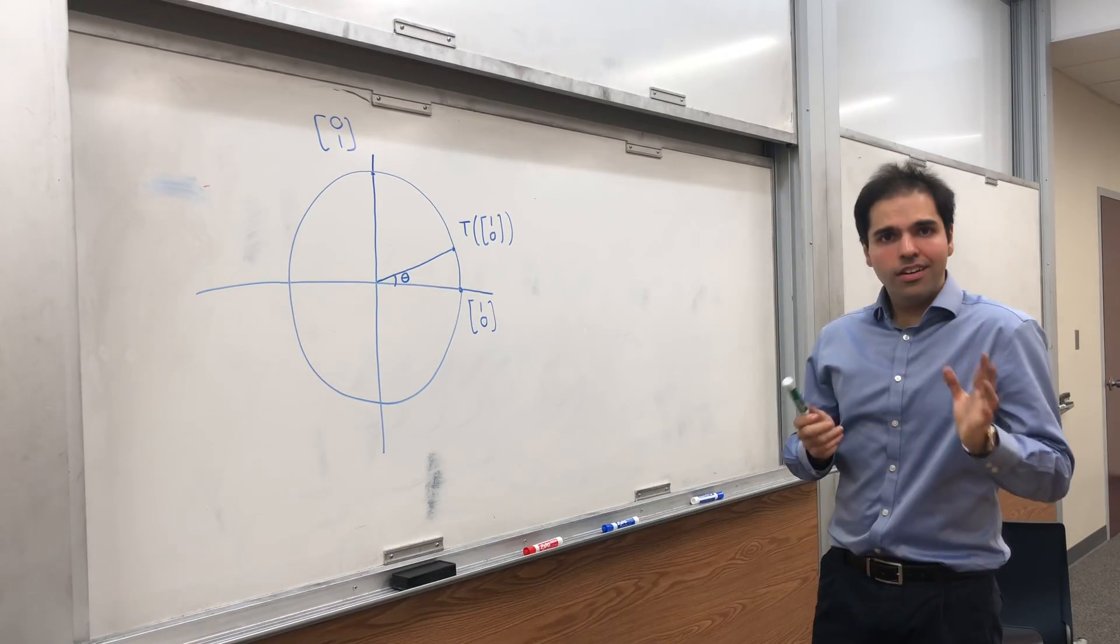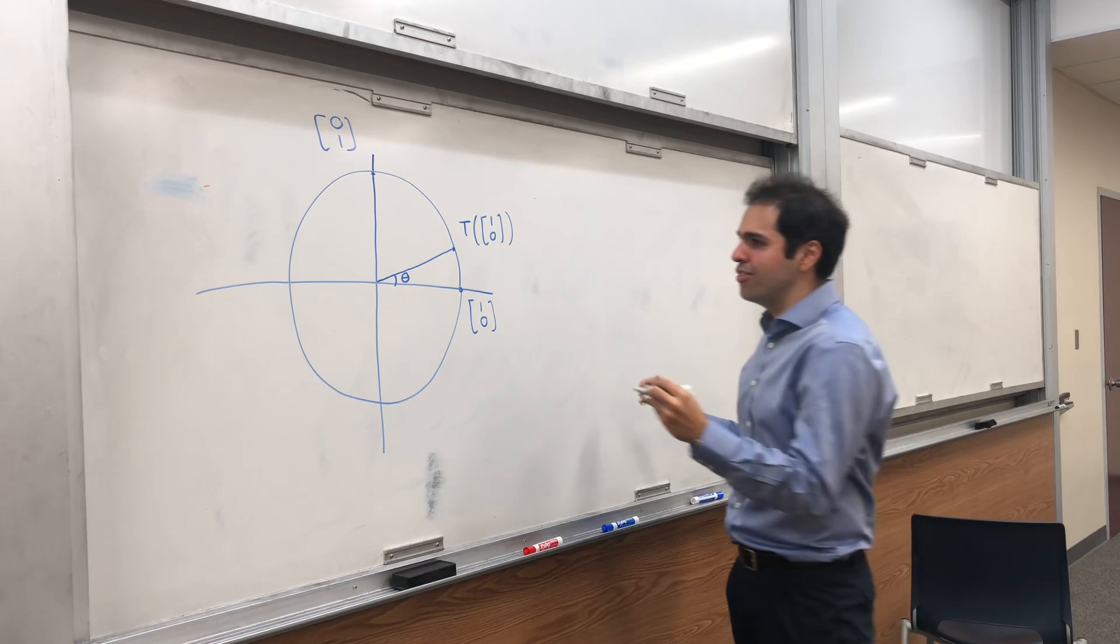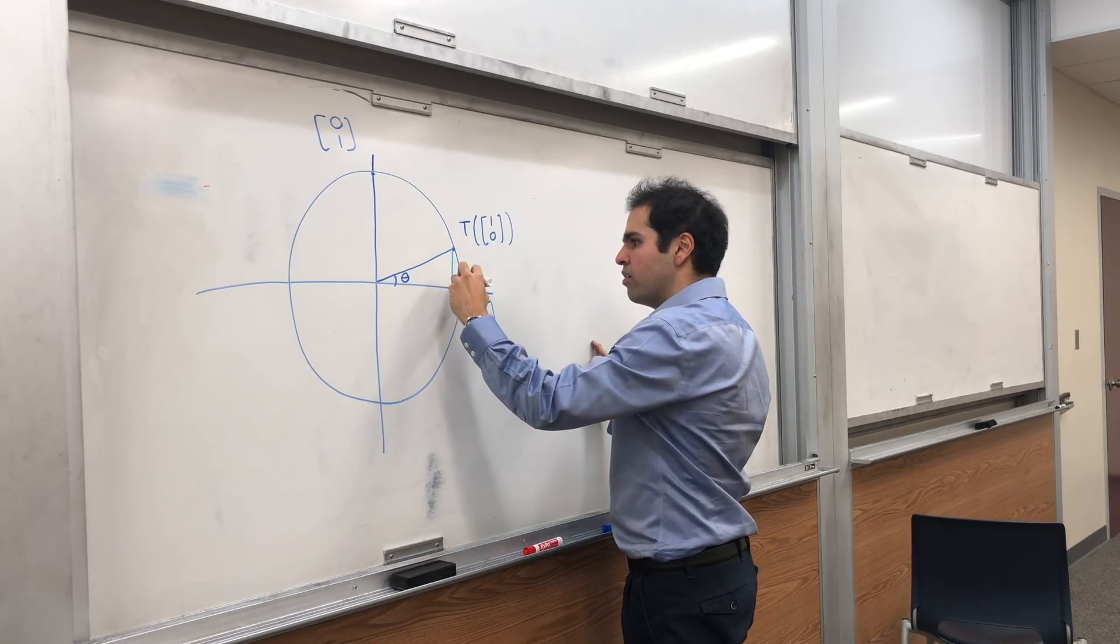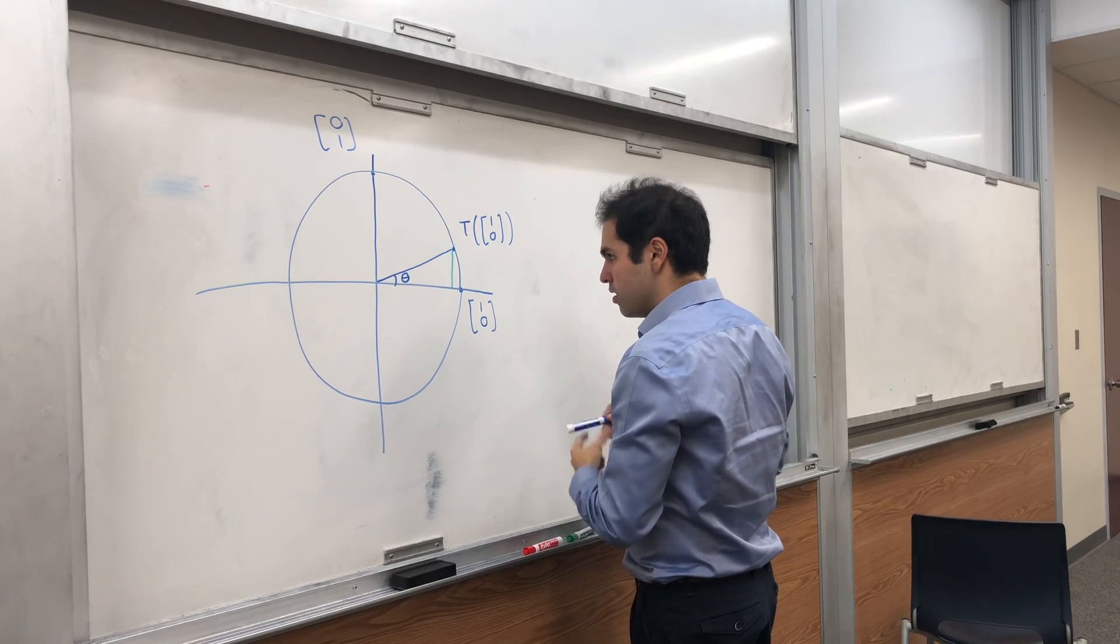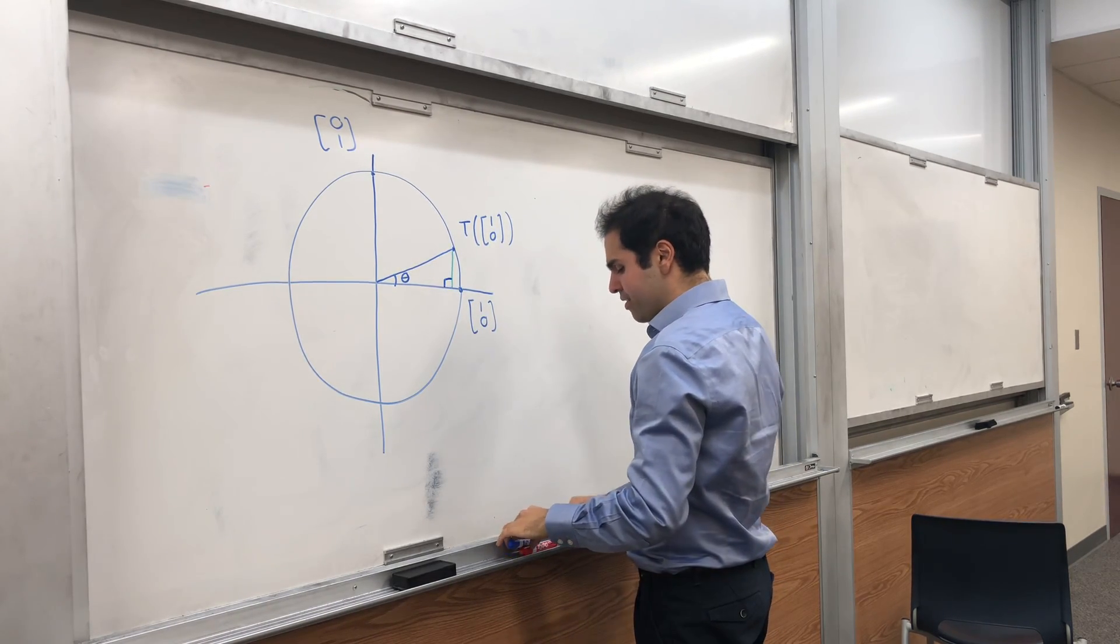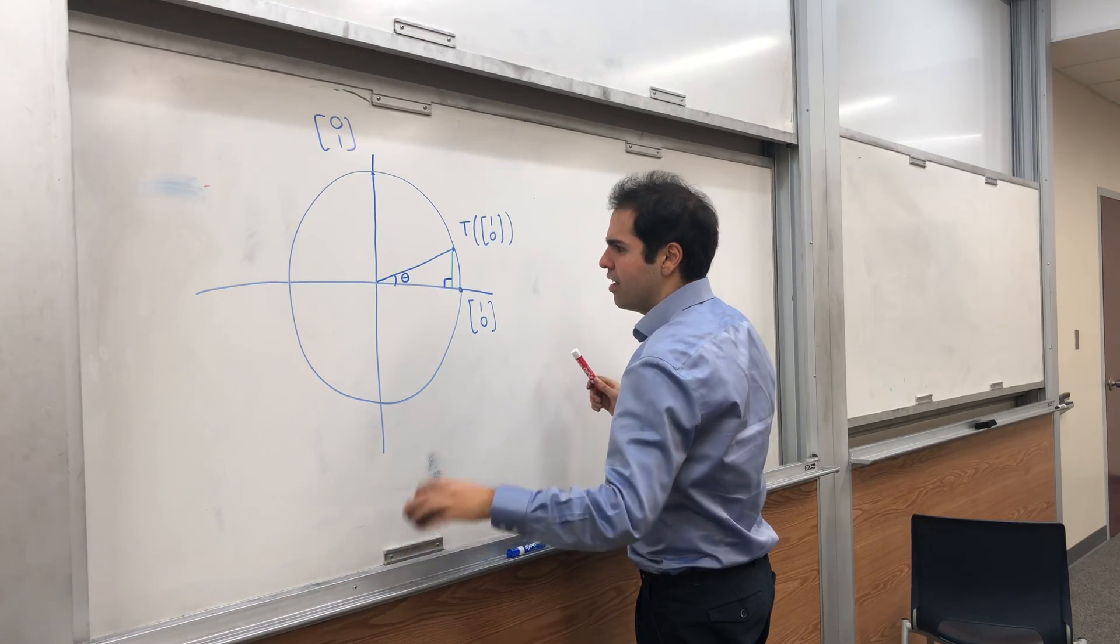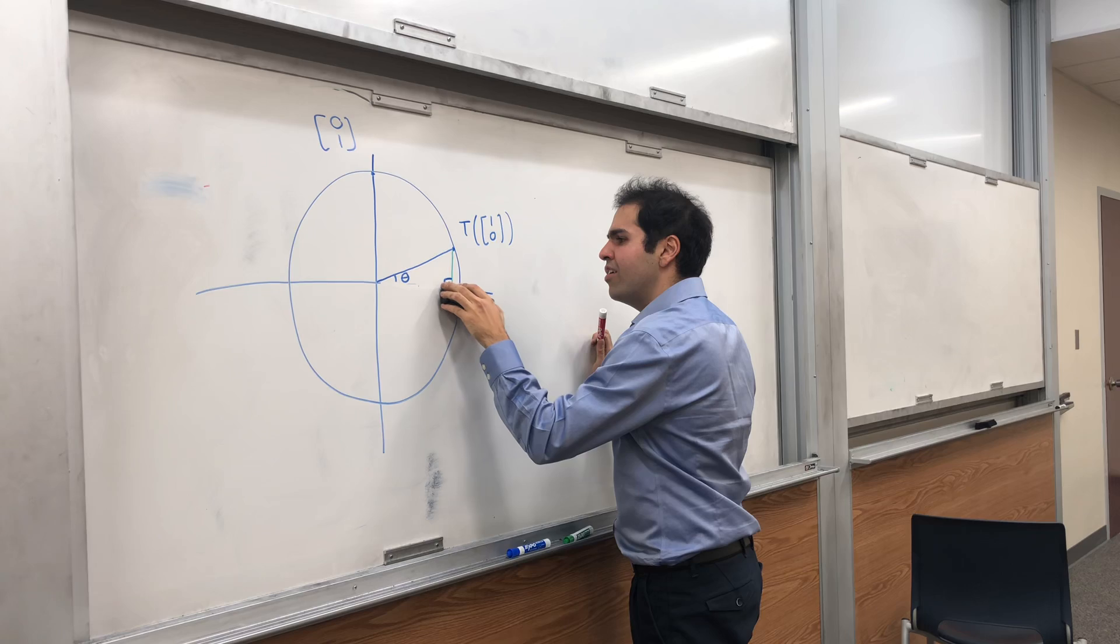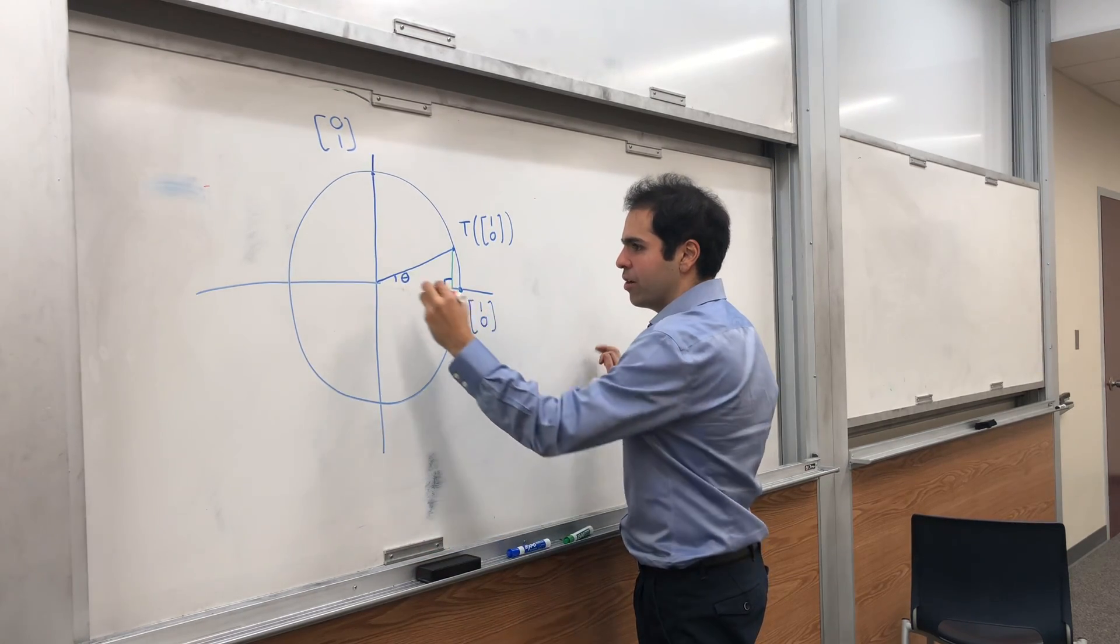And what we would have to figure out is simply the x-coordinate and y-coordinate of the new point. But notice, this is not too bad to find because we indeed get a right triangle here. So we have this right triangle, and the x-coordinate is simply the base of the triangle, and the y-coordinate is the height of the triangle.